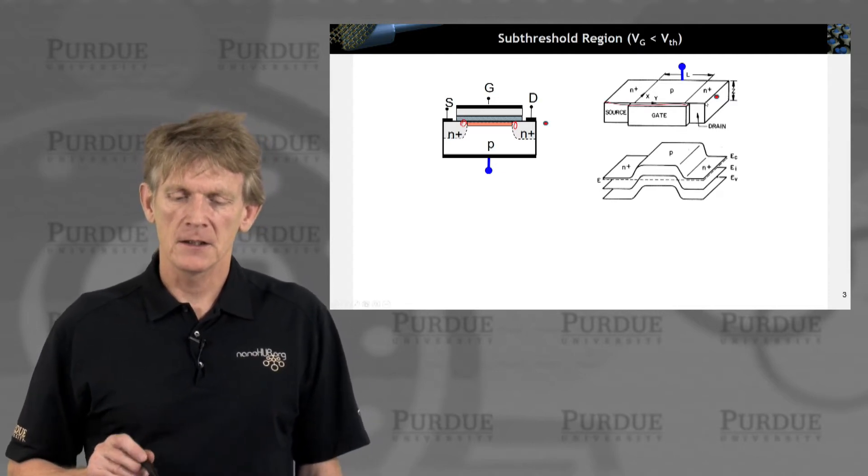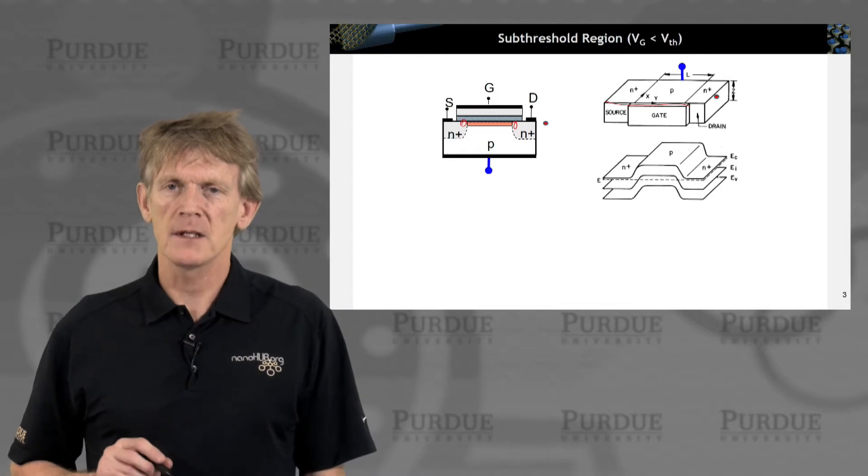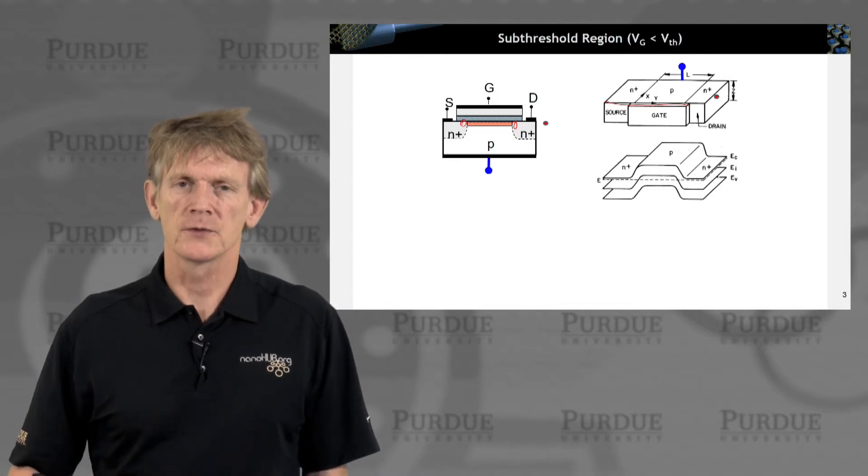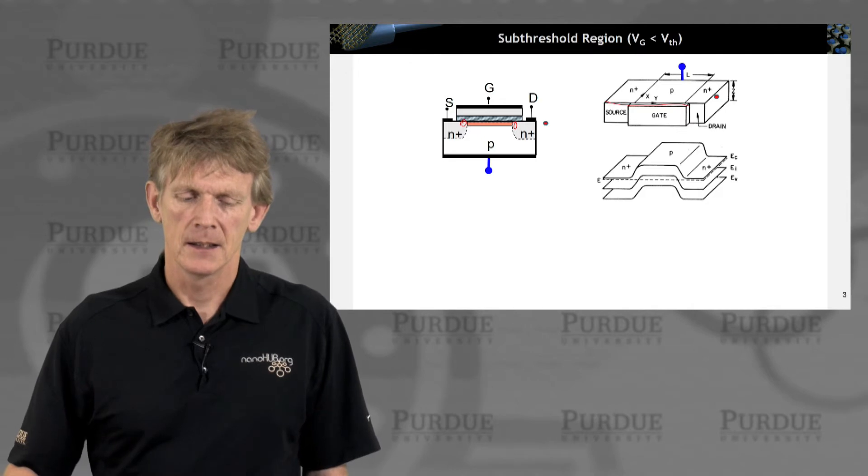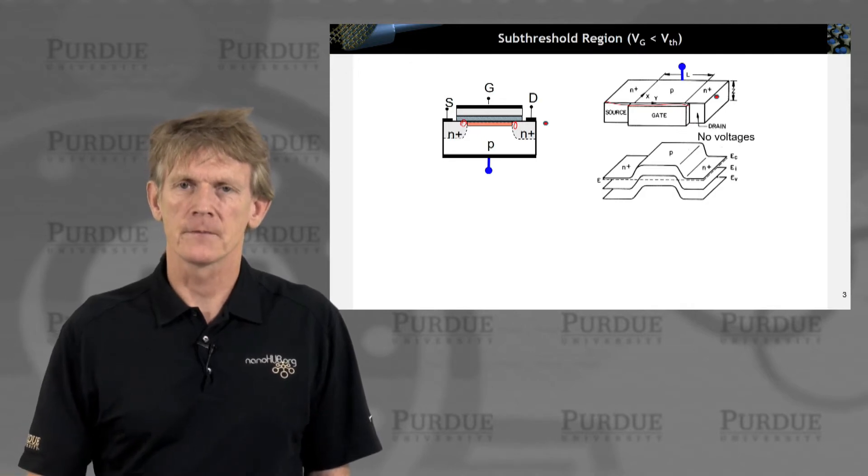you can basically see that you have an N plus PN plus region from source through the body and then again to the drain.